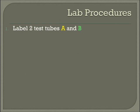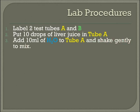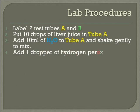So here's how you're going to do it. You're going to take two test tubes, A and B. You're going to put 10 drops of the liver juice in tube A, and add 10 milliliters of water to tube A and gently shake it. Tube A essentially just has liver juice and water. Tube B is going to get one dropper full of hydrogen peroxide, H2O2.